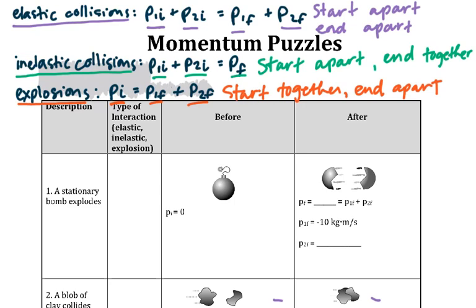Okay, so in this homework we're going to be given a scenario. We're going to have to evaluate it first for what type of interaction it is, and then we're going to try to solve the puzzle and fill in the blanks.